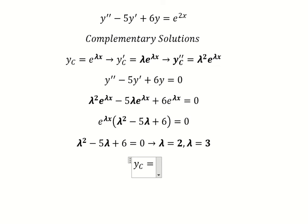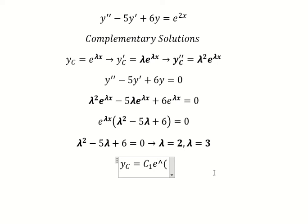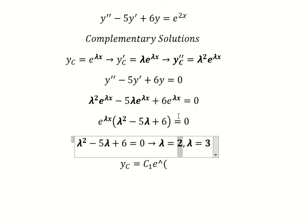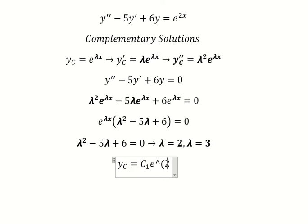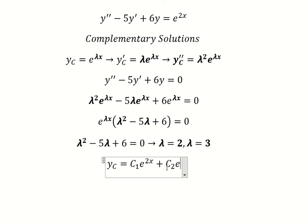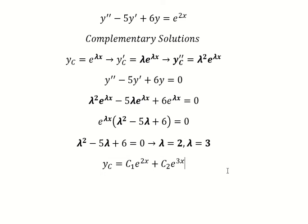So we have yc that is equal to c1 times e to the power of 2s plus c2 times e to the power of 3s. Now we go to the particular solution.